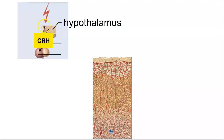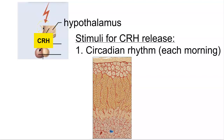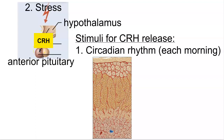The hypothalamus releases CRH every morning as part of a circadian rhythm. It can also release increased amounts of CRH in times of stress. CRH circulates from the hypothalamus to the anterior pituitary, causing the anterior pituitary to release the hormone ACTH — adrenocorticotropic hormone.